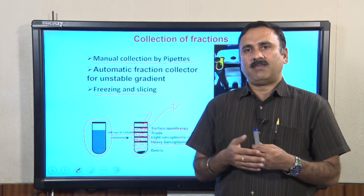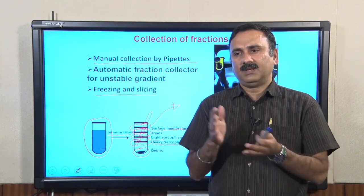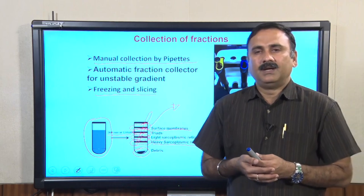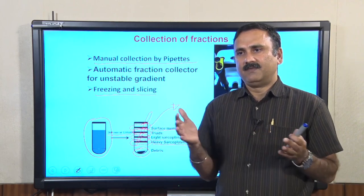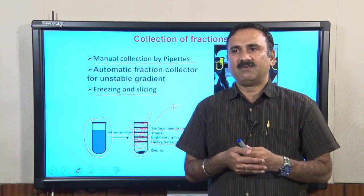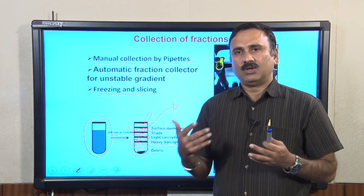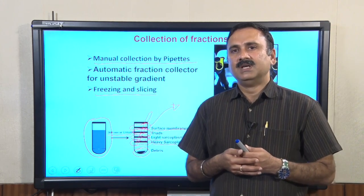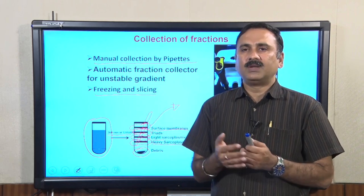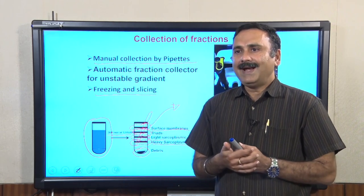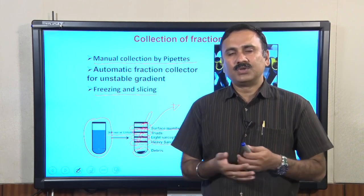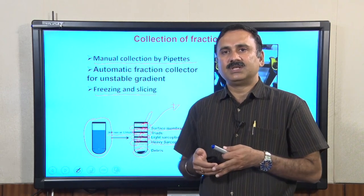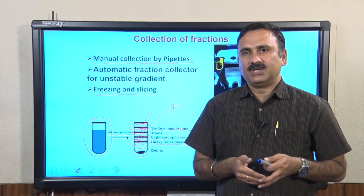In summary, we have discussed the presence of different organelles in eukaryotic cells and the instruments available to isolate these organelles from eukaryotic as well as prokaryotic cells. We briefly discussed how to isolate the periplasmic fraction or cytosolic fraction from prokaryotes, and in detail we discussed the different approaches — differential centrifugation and density gradient centrifugation — to isolate organelles from eukaryotic cells. Thank you.